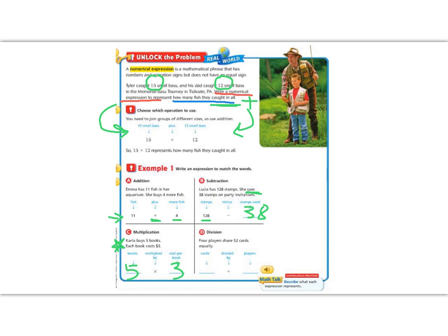And division. 4 players share 52 cards. Each. They share it. Share is an important word. Equally is an important word. They have 52 cards divided by 4 players.